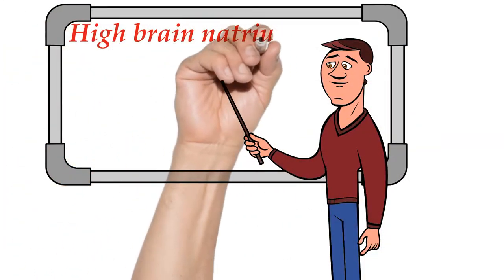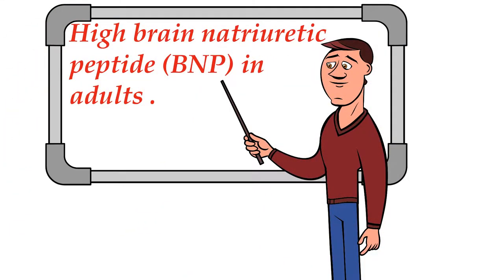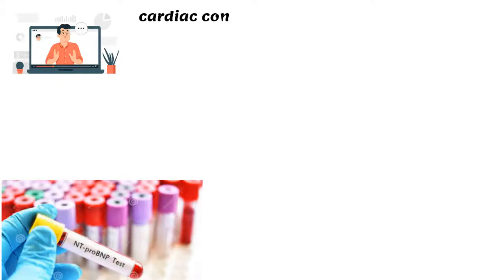High Brain Natriuretic Peptide, BNP, in Adults. Results of BNP testing must be interpreted with caution because many conditions cause an elevated BNP, or N-terminal pro-brain type natriuretic peptide, NT-pro-BNP.